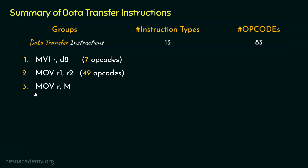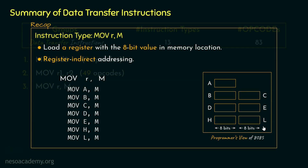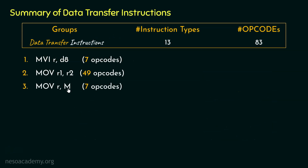The third instruction type is MOV R, M. Here we load a register with the 8-bit value from a memory location. The 8-bit value comes from the memory location pointed to by the HL register pair. In all seven opcodes of this type the source is M, where M is the memory location pointed to by the HL register pair. So with this type we covered seven more opcodes.